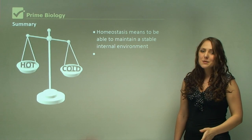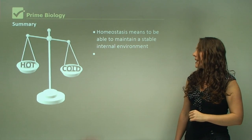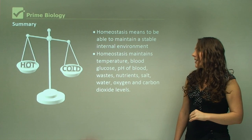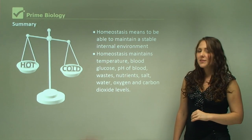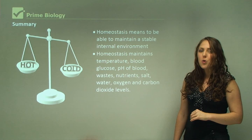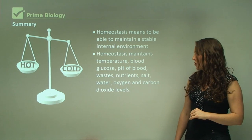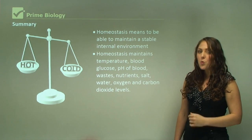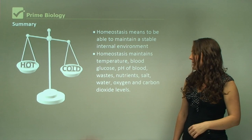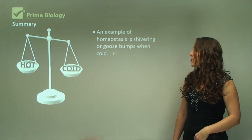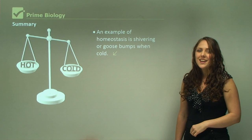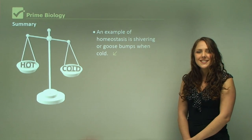In summary, homeostasis means maintaining a stable internal environment. It regulates temperature, blood glucose levels, the pH of blood, wastes, nutrients, salt levels, water levels, and oxygen and carbon dioxide levels. An example of homeostasis is shivering or getting goosebumps when cold. That concludes homeostasis.